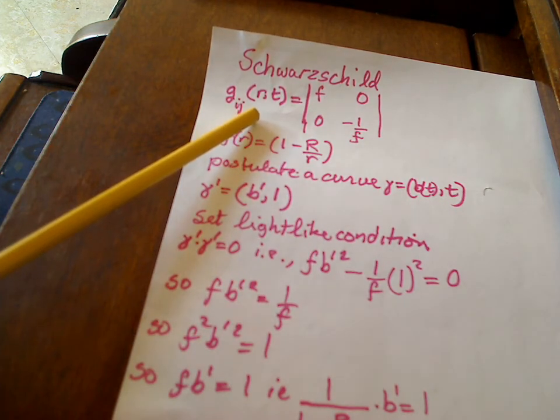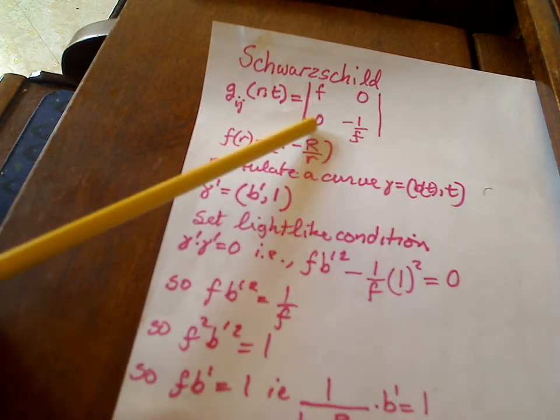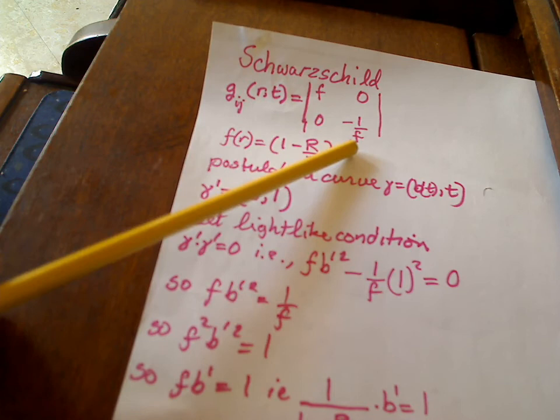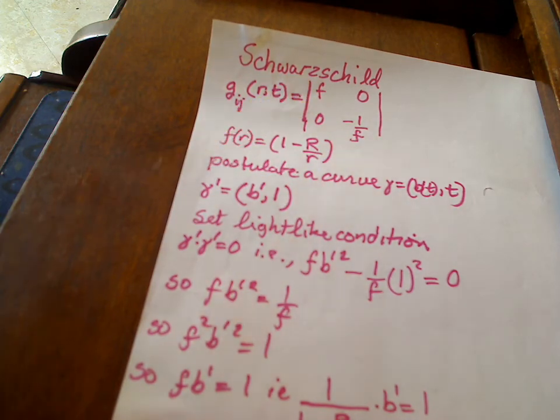g_ij of (r,t) is this matrix right here: f, zero, zero, minus one over f, where this f is just a function of r and not of t.